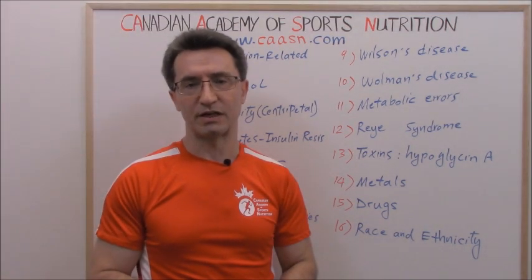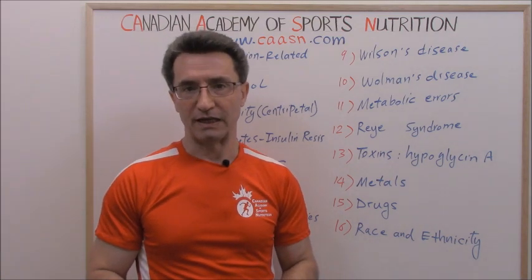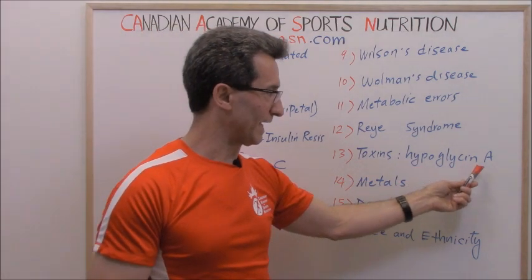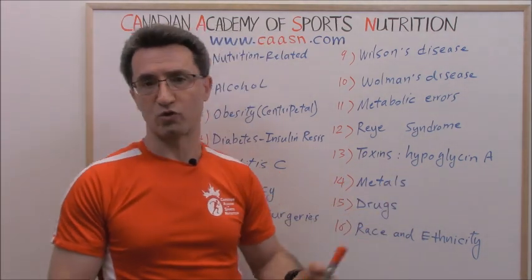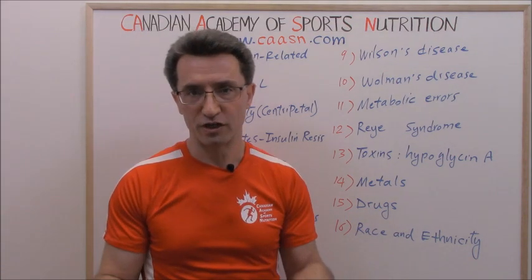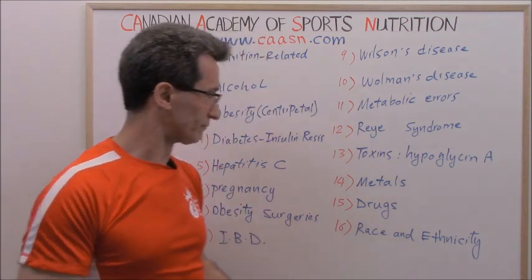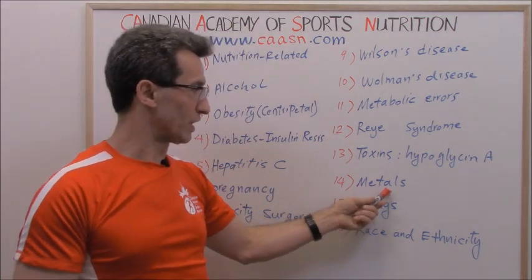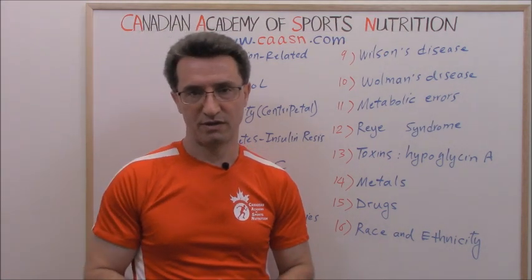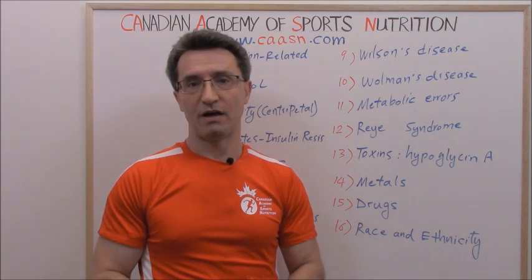Number thirteen: toxins. There are many environmental toxins that could lead to developing fatty liver. One example is hypoglycin A — an amino acid-like compound found in the fruits of a tree called the ackee tree.